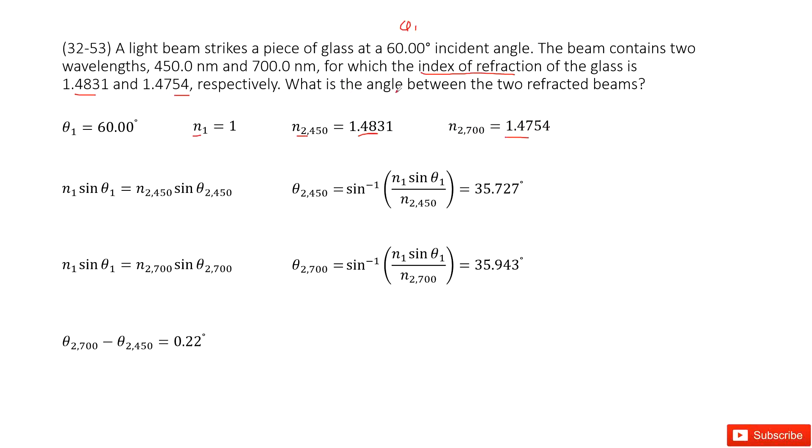It asks you what angle between the two refracted beams. So it looks like we must know the theta 2 in this case for this wave and theta 2 for 700 nanometer, then find the difference.